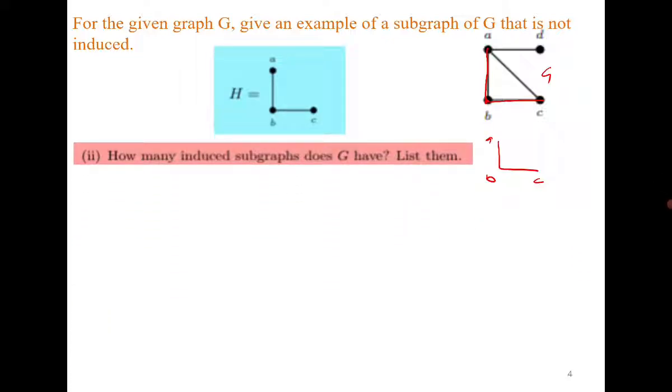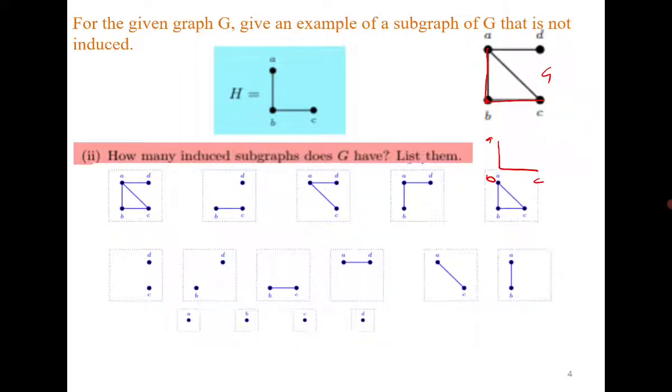Now, how many induced subgraphs does G have? I first suggest you to try to draw them all by yourself, and then think graph theoretically or combinatorially how this number is coming. If you try, there come out to be 15 subgraphs.